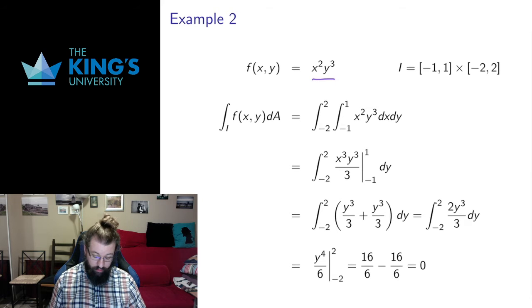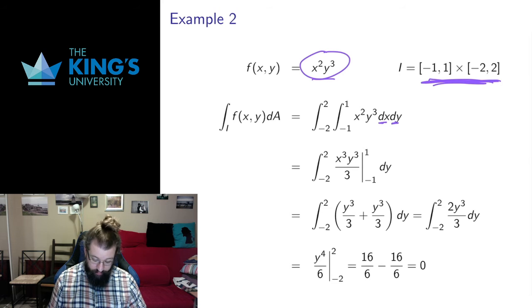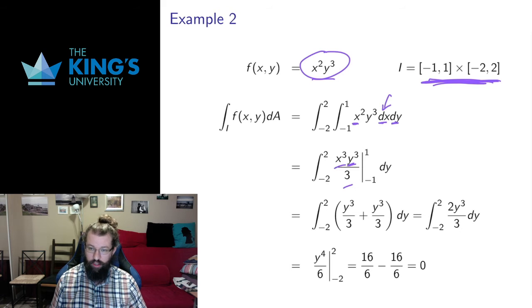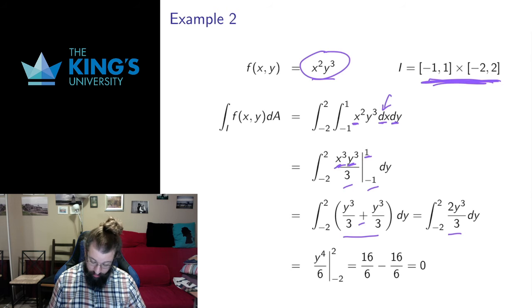Here's another example: x squared y cubed over [-1,1] × [-2,2]. This is some height map over this interval in the xy plane, and I want to know the volume underneath that graph. Here I'm going to integrate the x inside and the y outside, just to switch up the order a little bit. So x integrates from x squared to x cubed over 3. The y cubed is just a constant as far as the x integral is concerned. Then I evaluate at 1, subtract evaluate at negative 1. This is going to work out to 2y cubed over 3. Then I integrate this again, that integrates to y to the 4 over 6, evaluate that on the bounds, it's going to give me 16 over 6 minus 16 over 6 is 0.